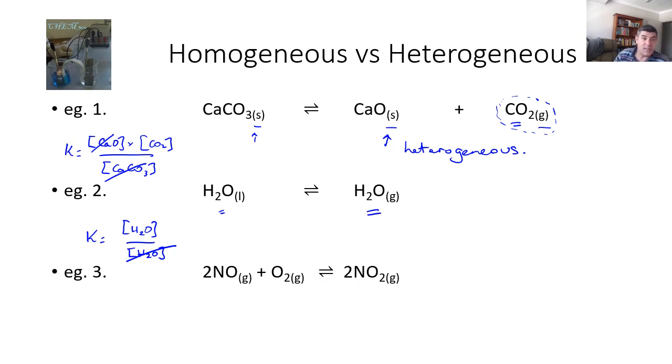Both these first two examples are examples of heterogeneous equilibrium, but the third one is a homogeneous equilibrium. So this time, all species are gases. When we work out our equilibrium expression, we can work it out on the basis of nitrogen dioxide raised to the power of two, divided by nitrous oxide raised to the power of two, multiplied by concentration of oxygen. Now, what we've done with each of these three equations is we've worked out the equilibrium expression. But does that mean we can actually experimentally determine any of these particular systems?